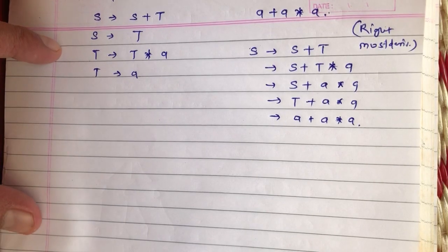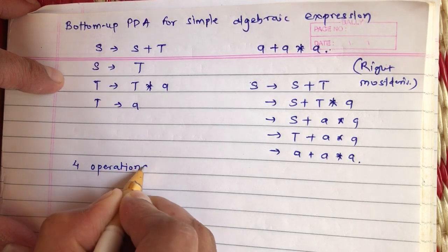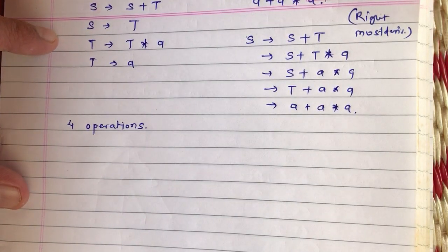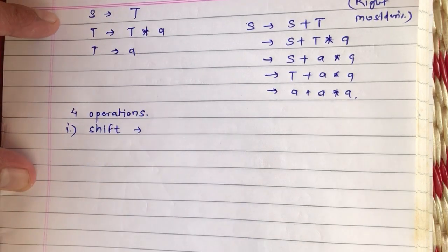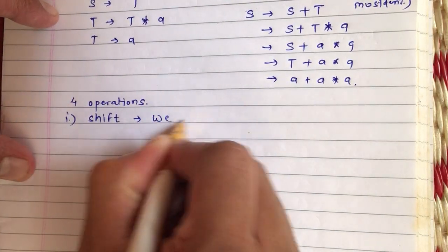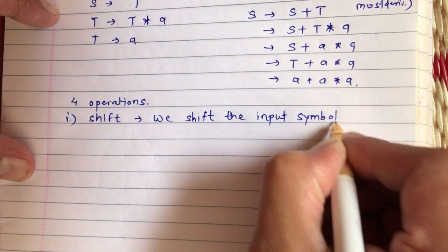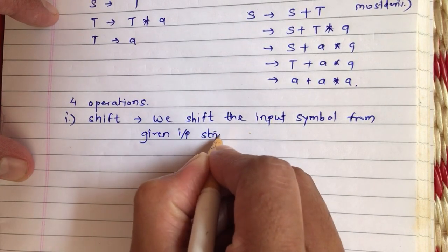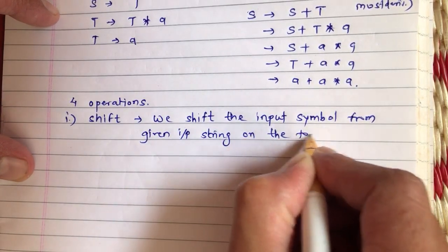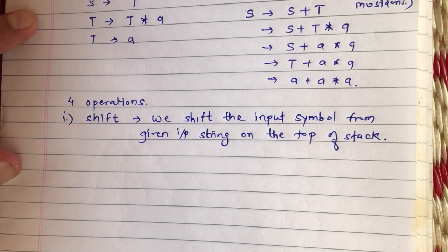In order to do this in a bottom-up PDA, we have basically four operations. The first is the shift operation. In a shift operation, we shift the input symbol from the given input string onto the top of the stack. So if I read a particular symbol, say A, and push it onto the top of stack, that operation is called a shift operation.